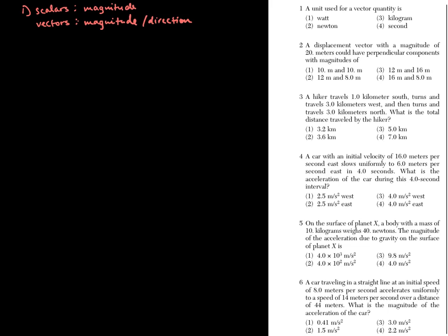Number one will always be a question about scalars and vectors. This one is asking which unit is used for a vector quantity. We have to remember the differences between scalars and vectors: scalars have magnitude, and vectors have magnitude and direction. Think of vectors as things you could represent with arrows. Some past exams ask which is a scalar, which is a vector, or compare them. But this one is about units tied to quantities.